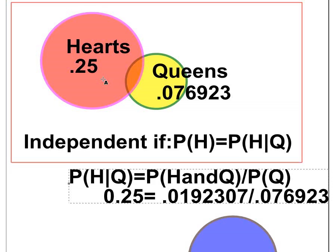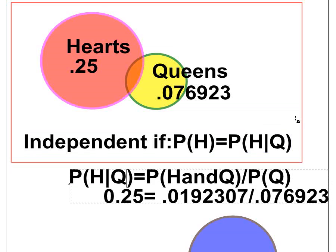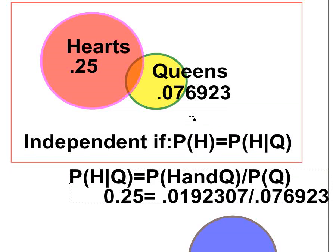What statistical independence means is that once you know a card is a queen, it does not change the probability that it's a heart. This works both ways: the probability of drawing a queen does not change once you know the card is a heart either. Play this game with a deck of cards and convince yourself. We'll see some other examples of statistical independence as we go along — it's a complex idea, but we'll come back for another part.